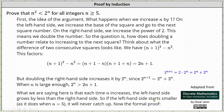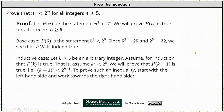So if the left side starts smaller, as it does when n equals 5, it will never catch up. And now let's look at the formal proof. Let P of n be the statement that n squared is less than 2 to the power of n.